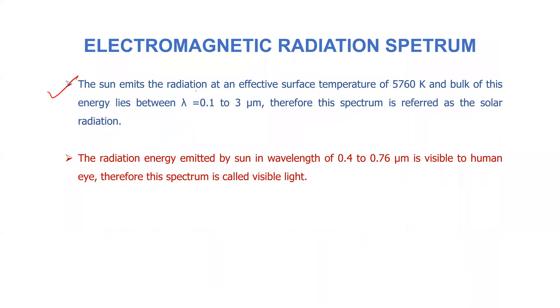The sun emits the radiation at an effective surface temperature of 5760 Kelvin and bulk of this energy lies between lambda equal to 0.1 to 3 microns. Therefore, this spectrum is referred to as the solar radiation. The radiation energy emitted by the sun in the wavelength from 0.4 to 0.76 microns is visible to human eye. Therefore, this spectrum is called visible light.